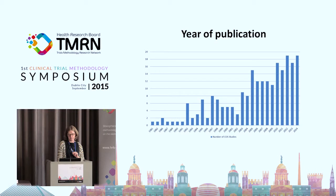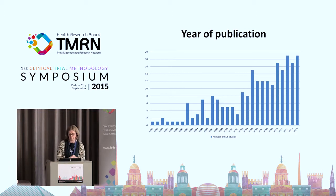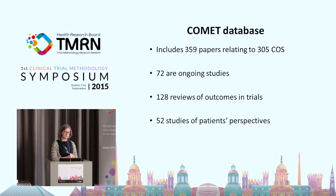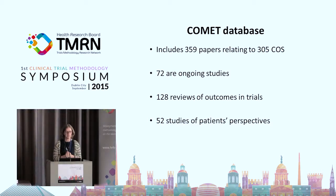The database is being populated through a systematic review. Over time, there's been a steady increase in the number of core outcome sets published, and we're expecting that to continue. There are currently 305 core outcome sets in the database, 72 of which are ongoing. The Comet database also acts as a means for people to register ongoing projects, so if you have an interest in a particular area you can join forces with a group working in Australia or the States — it's a way of linking people together.